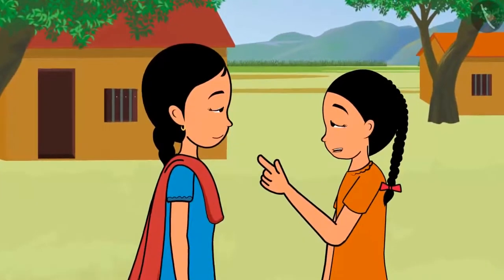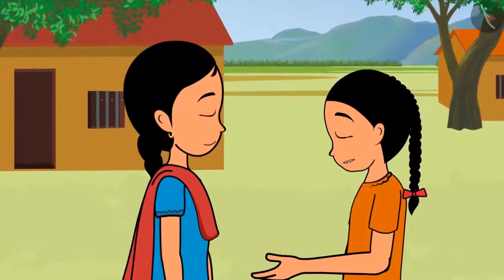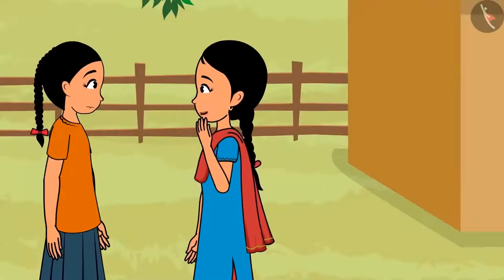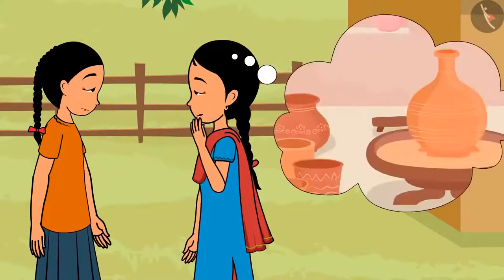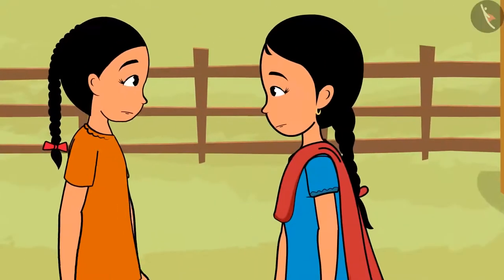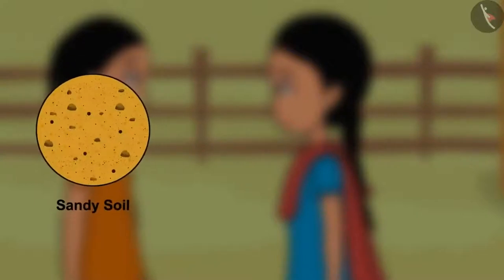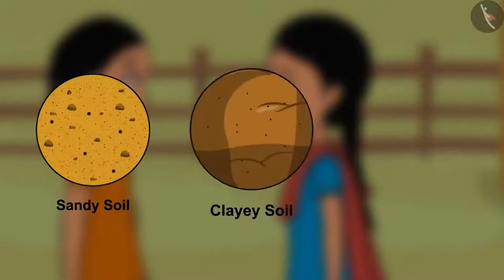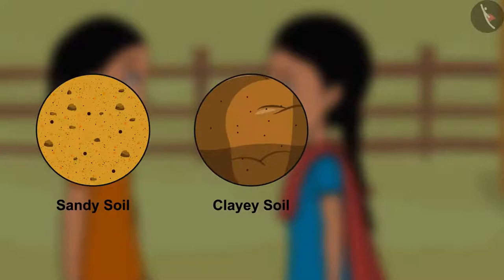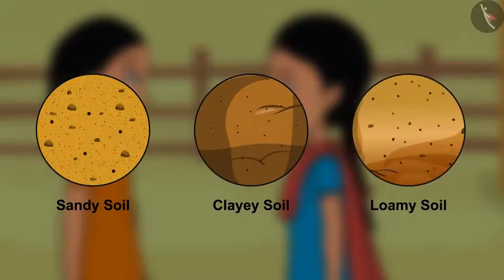Hey Minu, you are talking just like a teacher — just a pair of glasses is missing! What do you think — what kind of soil does Shammu kaka use to make the pots? Let us go and find out! So friends, we can divide soil into three types: sandy soil which has more loose particles, clay soil which is sticky and has small particles, and loamy soil which has a balance of small and big particles. We will meet soon in the next video.